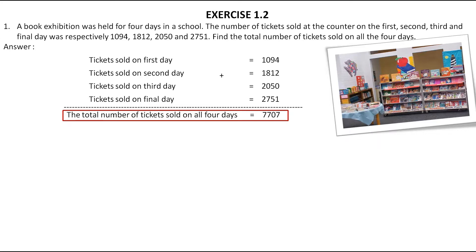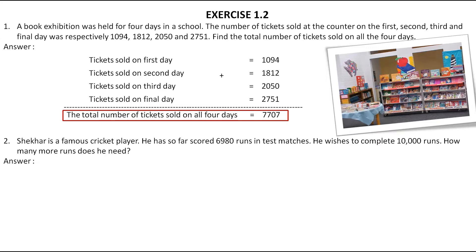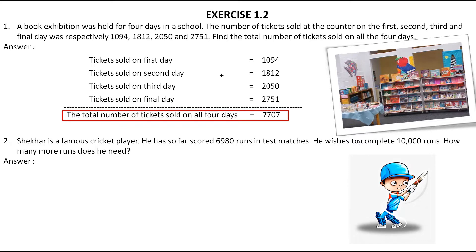Now let's see the second question. Shekhar is a famous cricket player. He has so far scored 6980 runs in test matches and he wishes to complete 10,000 runs. How many more runs does he need? Shekhar wishes to complete 10,000 runs and has already scored 6980 runs. We have to find out how many more runs he needs.